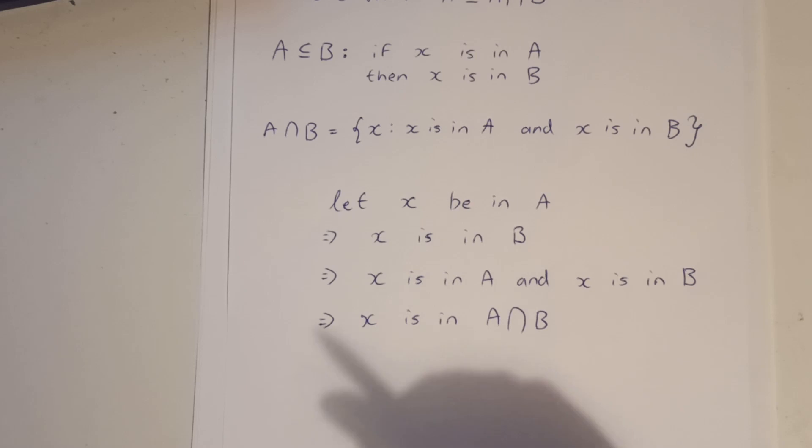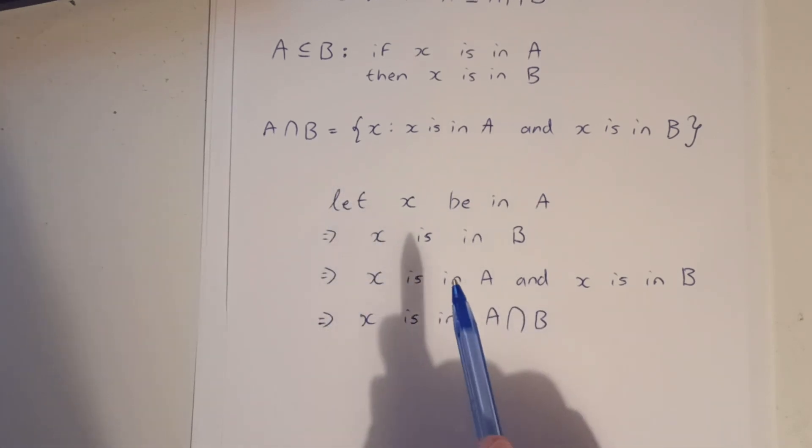And then we started off with, let X be in A, and we were able to say that X is in A intersection B.